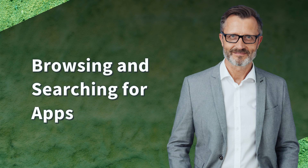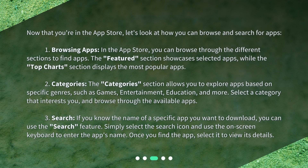Browsing and Searching for Apps. Now that you're in the App Store, let's look at how you can browse and search for apps. In the App Store, you can browse through the different sections to find apps. The Featured section showcases selected apps, while the Top Charts section displays the most popular apps. The Categories section allows you to explore apps based on specific genres, such as games, entertainment, education, and more. Select a category that interests you and browse through the available apps.